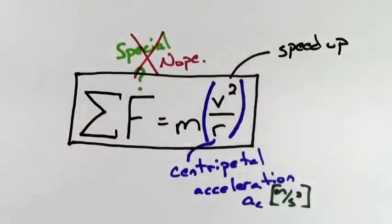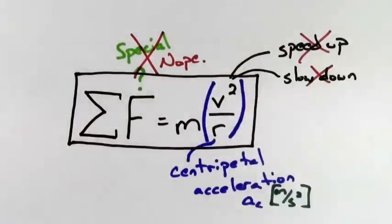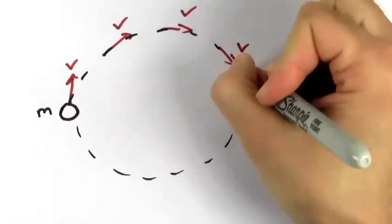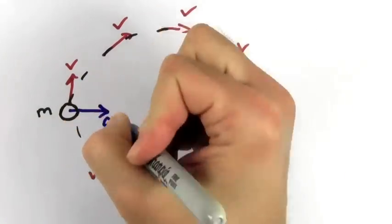We give it a special name because this type of acceleration does not speed you up or slow you down. It just changes the direction of the velocity. Since acceleration is a change in velocity, even changing direction counts as acceleration.